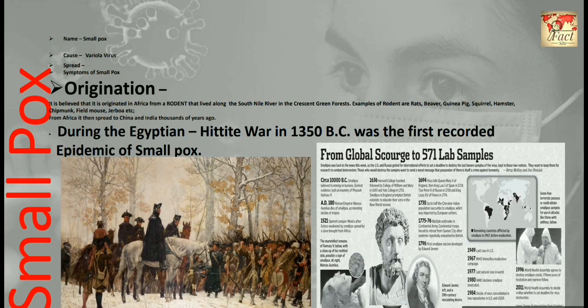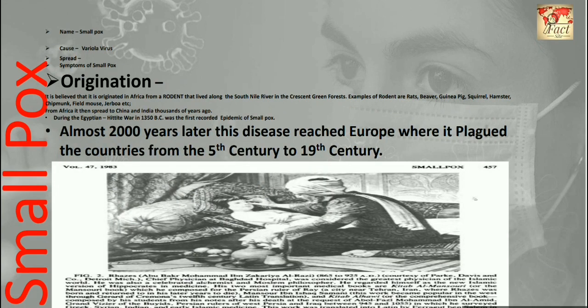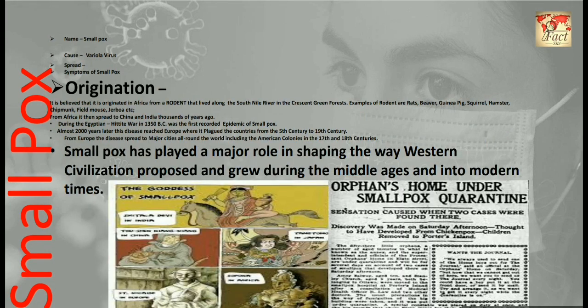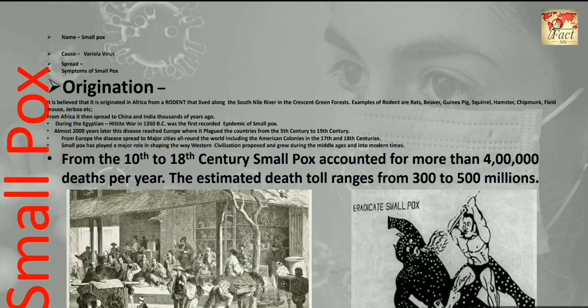During the Egyptian-Hittite War in 1350 BC, the first recorded epidemic of smallpox occurred. Almost 2,000 years later, the disease reached Europe, where it plagued countries from the 5th century to the 19th century. From Europe, the disease spread to major cities all around the world, including the American colonies in the 17th and 18th centuries. Smallpox played a major role in shaping Western civilization through the Middle Ages and into modern times. From the 10th to 18th century, smallpox accounted for more than 400,000 deaths per year, with an estimated total death toll ranging from 300 to 500 million.